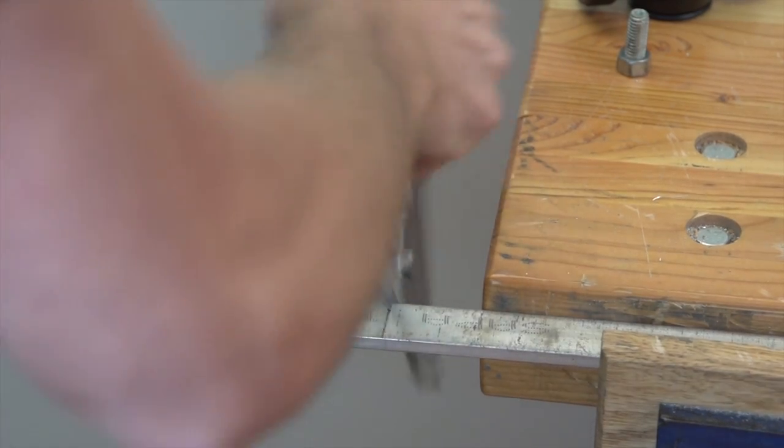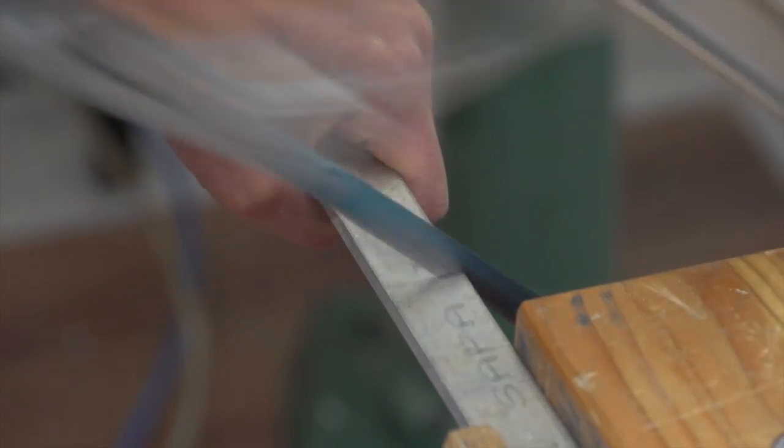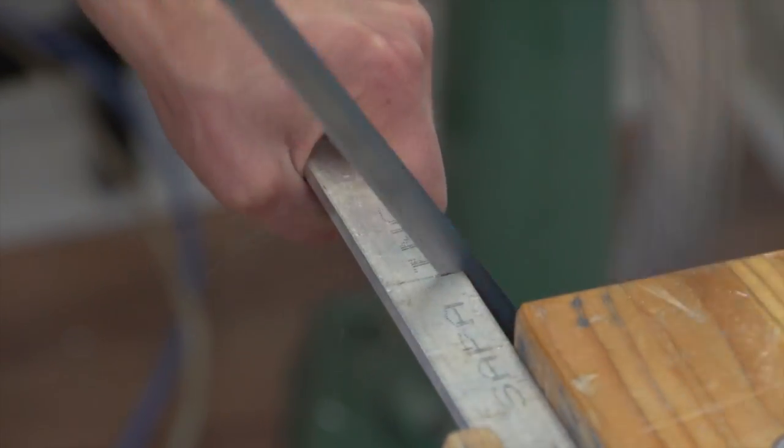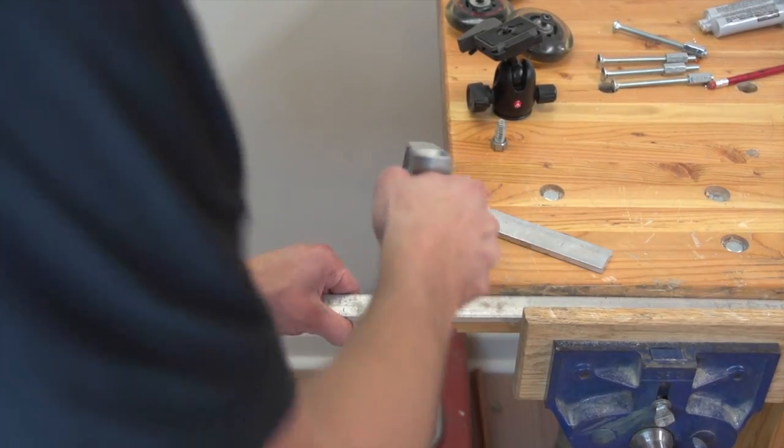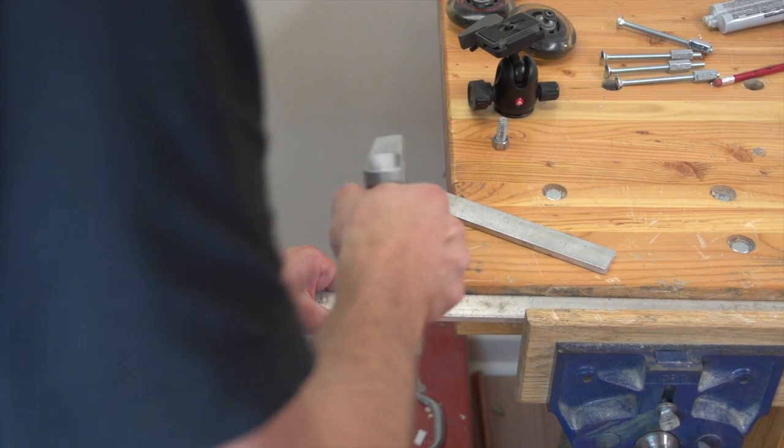Cut the angle aluminum into 2 pieces that are 3 feet long and set them to the side. From the flat bar, cut 2 pieces that are 6 and a quarter inch long, 1 piece that's 4 inches long and 1 piece that's 3 and a half inches long.